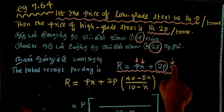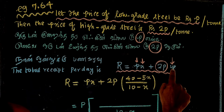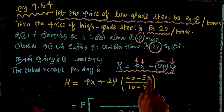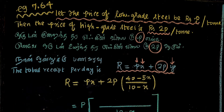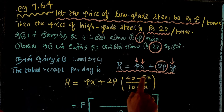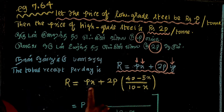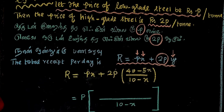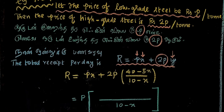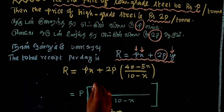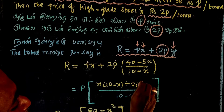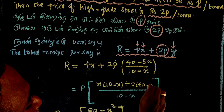The receipts R is equal to p times x plus 2p times (40 minus 5x) divided by (10 minus x). Multiplying out: x times (10 minus x) plus 2 times (40 minus 5x), all divided by (10 minus x).